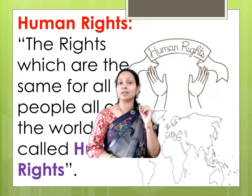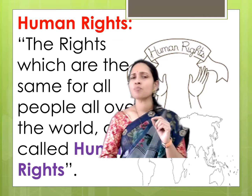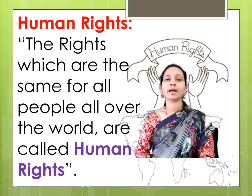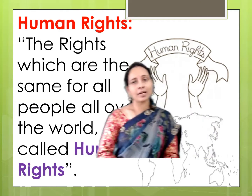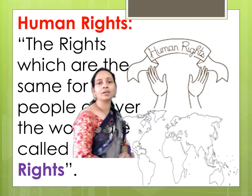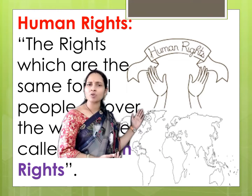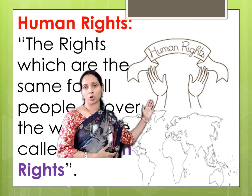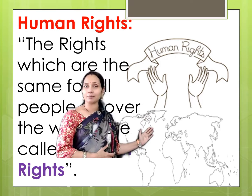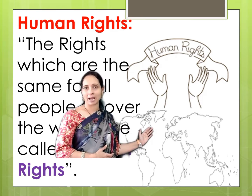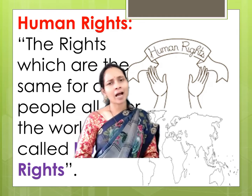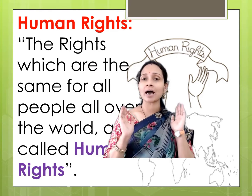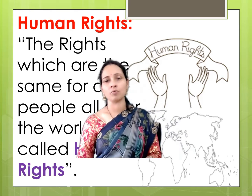What is human rights? The rights which are the same for all people all over the world are called human rights. We have here two images. One symbolizes the human rights symbol. Another image is about the world map. It highlights that human rights are the same all over the world.